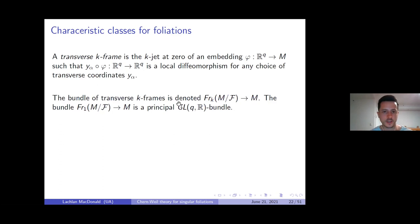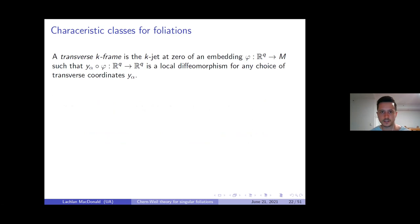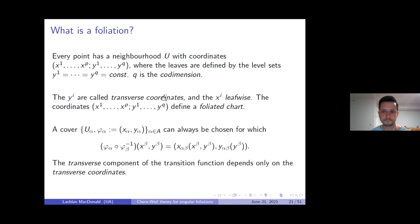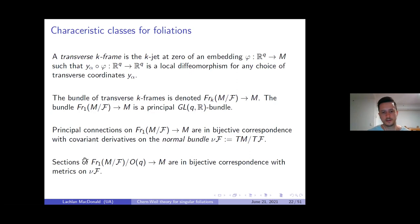We have associated bundles of transverse K-frames. In particular, the bundle of transverse one-frames is a principal fiber bundle with structure group GL(Q). The notation M/F is usually reserved for the leaf space — think of these as frames for the leaf space of the foliation. Principal connections on one-frames are in one-to-one correspondence with covariant derivatives on the normal bundle — the quotient of the tangent bundle of M by the tangent bundle to the leaves. The normal bundle should be thought of as something like the tangent bundle to the leaf space of the foliation.